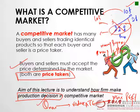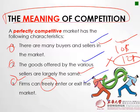The aim of this lecture is to understand how firms make production decisions in a competitive market, and we want to find out the maximum quantity using total cost to find maximum profit. The meaning of competition we just learned can be summarized into three points: number one, there are many buyers and many sellers; number two, the goods offered by the various sellers are largely the same or identical products.